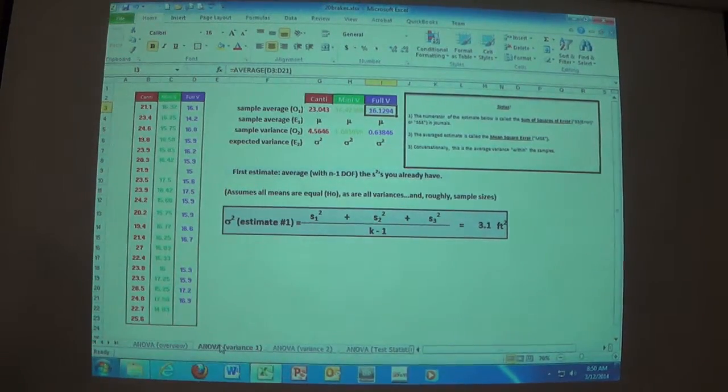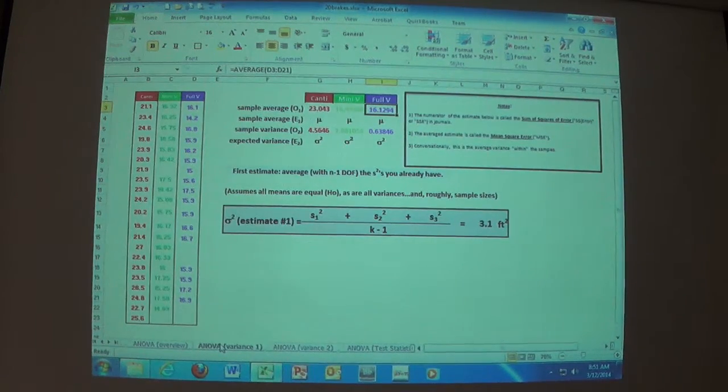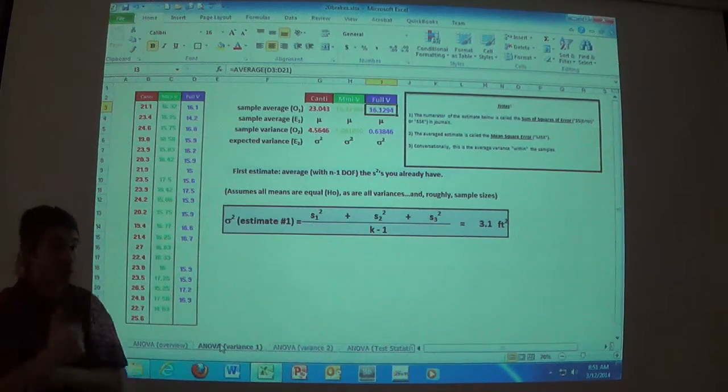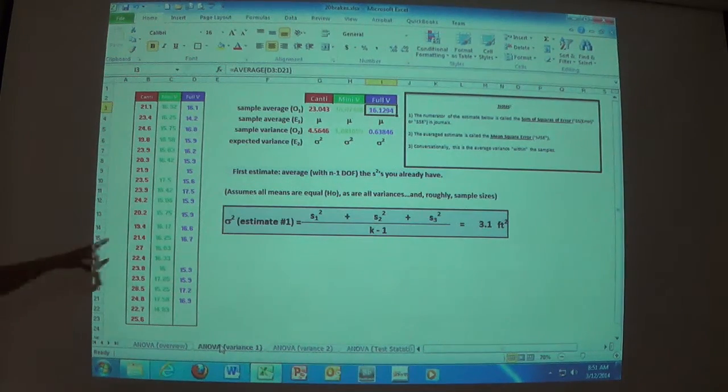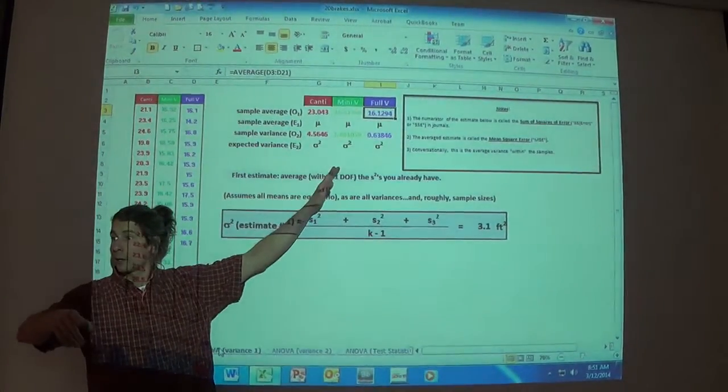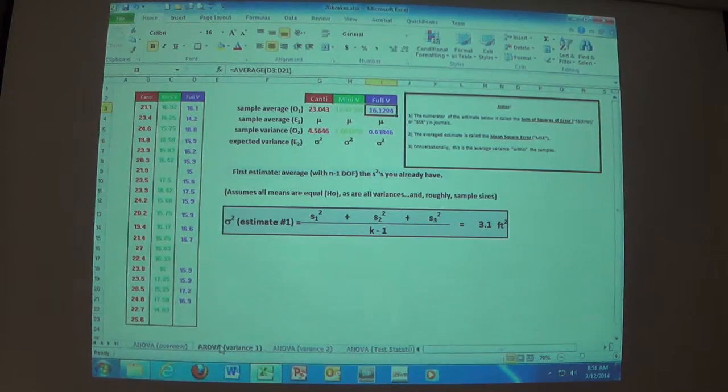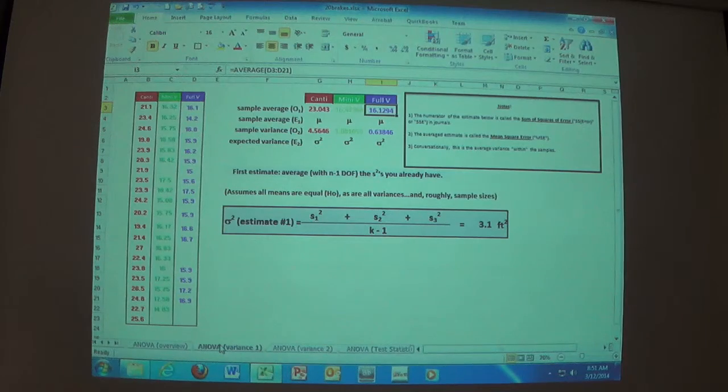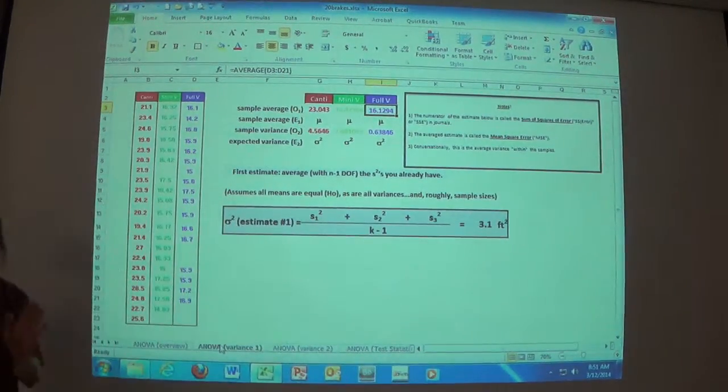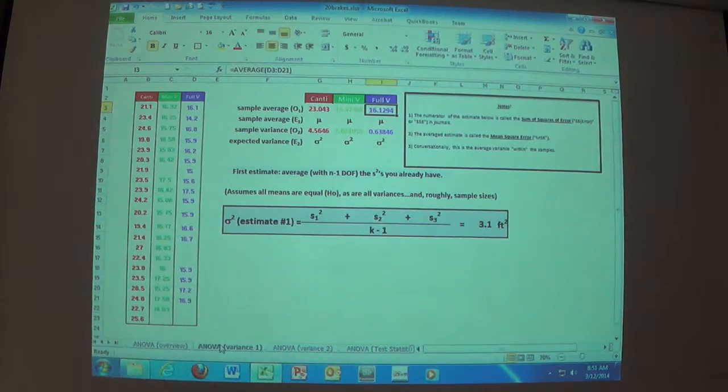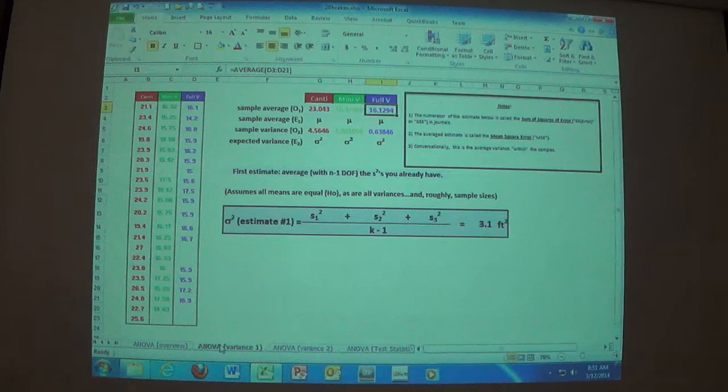You just average the three variances you already have. And if they're roughly equal anyway and there's no skew, if you feel better weighted average, that's fine too. It doesn't change it that much. You got three categories. Each one has a variance. They're roughly the same. The sample sizes are roughly the same. That plus that plus that divided by how many there are, boom. Average about 3.1 square feet. That's one way.